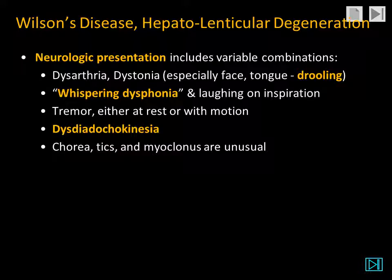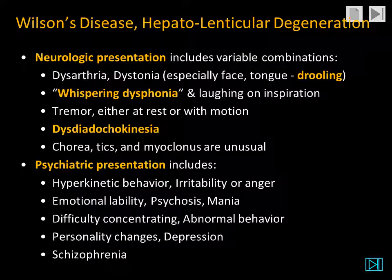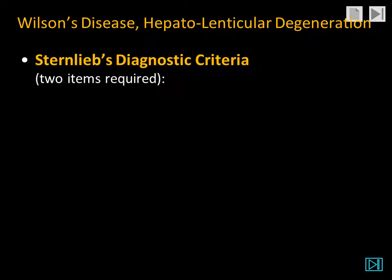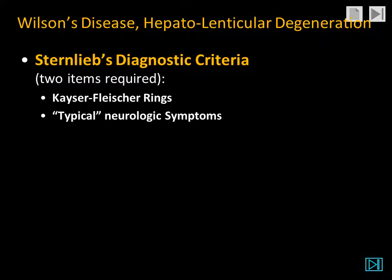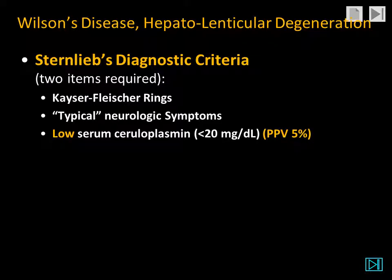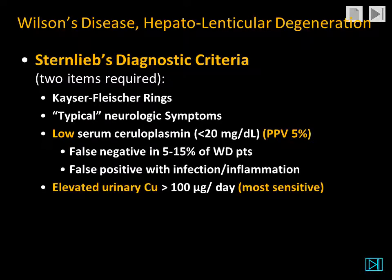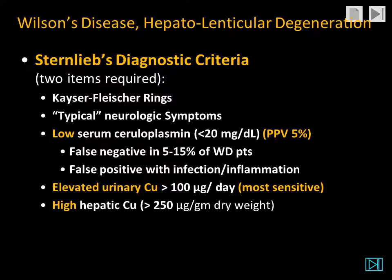Whispering dysphonia was also present in our patient. They may have tremor, dysdiadochokinesia, and chorea; tics and myoclonus are unusual. The psychiatric presentation is very variable. The diagnostic criteria, Sternlieb criteria, require two items from this list: Kayser-Fleischer rings, typical neurologic symptoms, a low serum ceruloplasmin, elevated urinary copper, and high hepatic copper. Four of these were present in this patient.